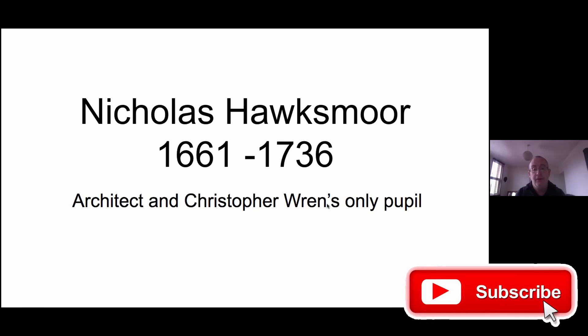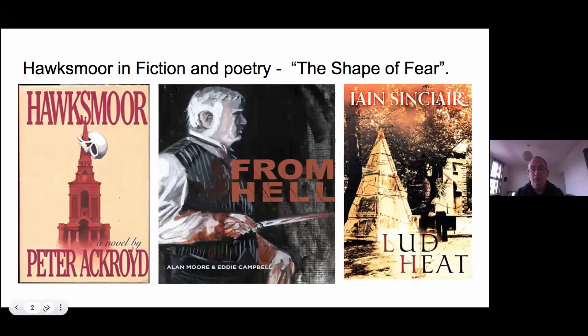This presentation is about some of the work of Nicholas Hawksmoor. He was an architect and Christopher Wren's only pupil. Most people of our sort of age came across Hawksmoor through fiction — most famously his churches feature in 'From Hell' by Alan Moore, which is an amazing graphic novel about the Jack the Ripper murders. In it, Hawksmoor's churches feature as part of some kind of Masonic ritual murder.